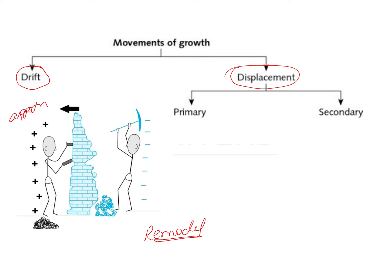This cartoon is mimicking how bone is being laid down. This wall is representative of bone. On one side of the wall, this man is laying down bricks — he's building the wall, so this is an area of apposition. On the other side, this man is removing the bone, so this is an area of resorption. Ultimately this bone is going to undergo remodeling, and drifting is the movement of the bone in the direction of apposition.